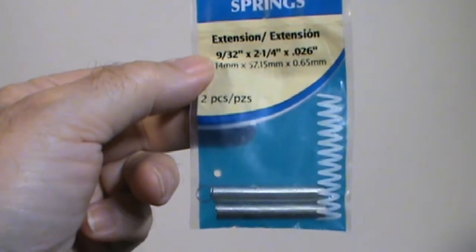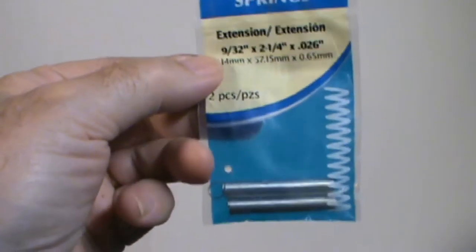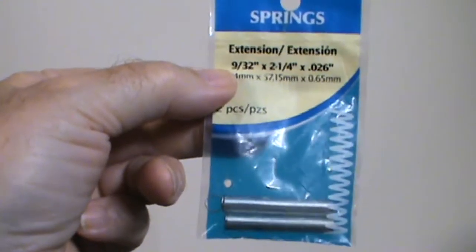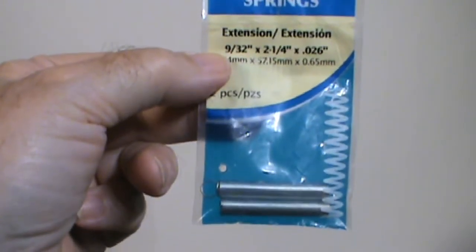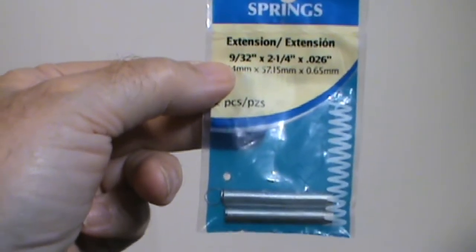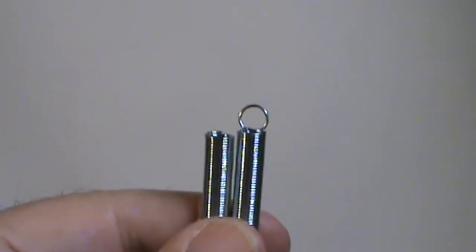Also get the springs you will use to create the tool. These springs are 9/32 inch and they work great for a half-inch dowel. There are two in the package.